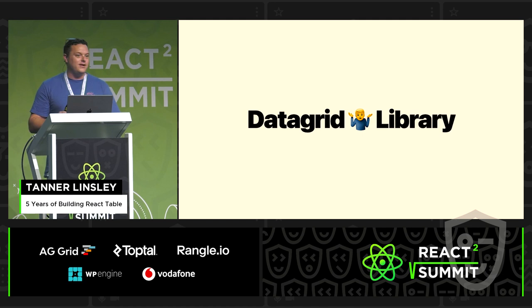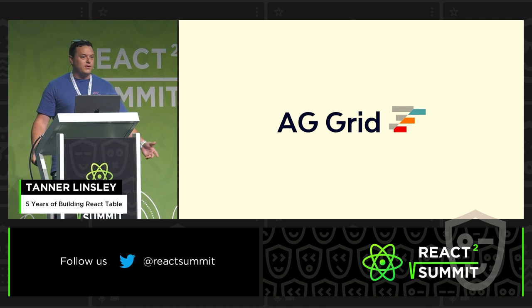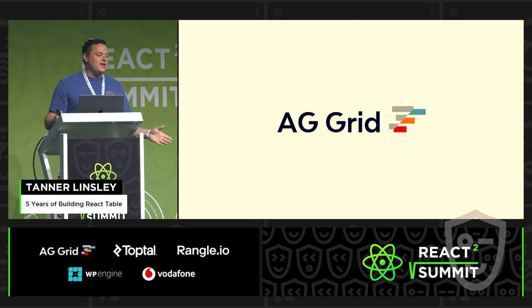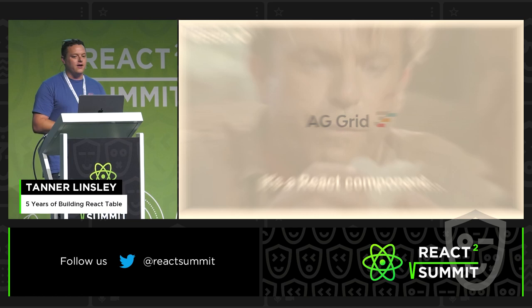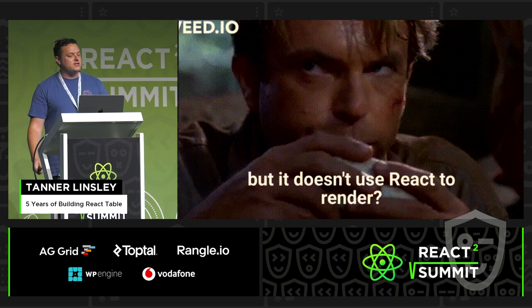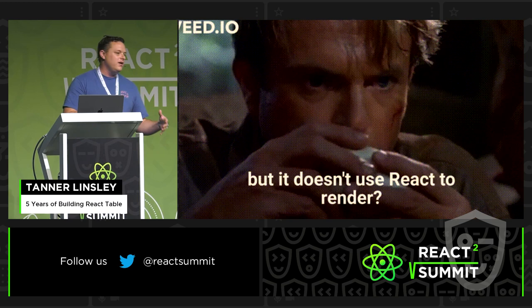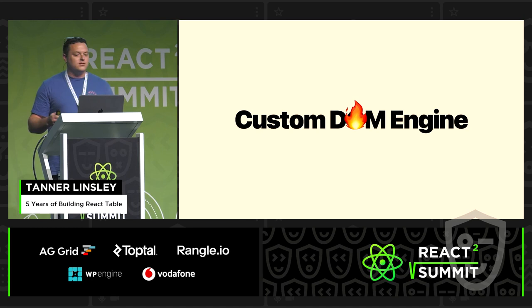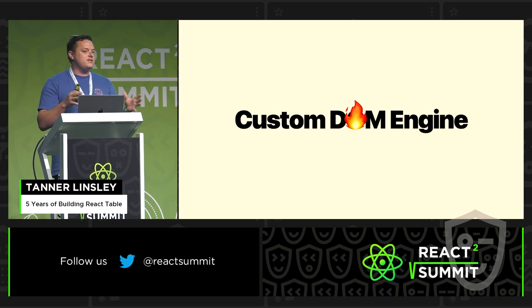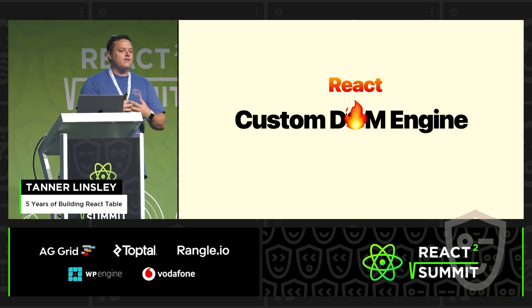I was like, wait — ag-grid has a React adapter. We are saved. And guess what? We were. We were able to migrate and just keep using ag-grid, and it was honestly super cool. But we did run into some little issues. We noticed that under the hood, ag-grid was not rendering using React. It was shipping with its own custom DOM manipulation engine, which explained why it was so crazy fast. But in the process, React kind of got burned a little bit — there wasn't the level of integration we were looking for.